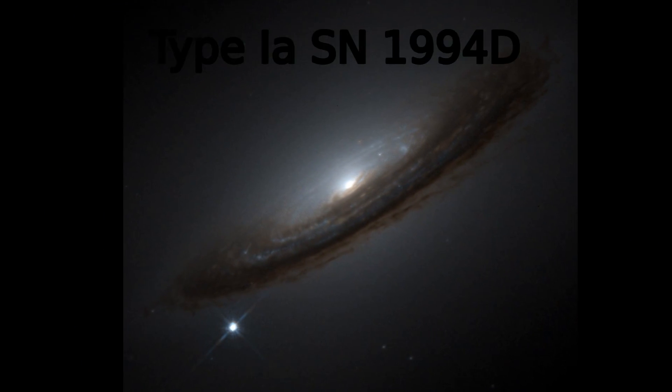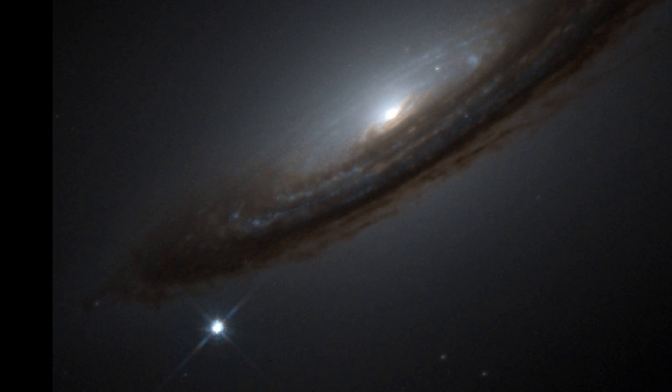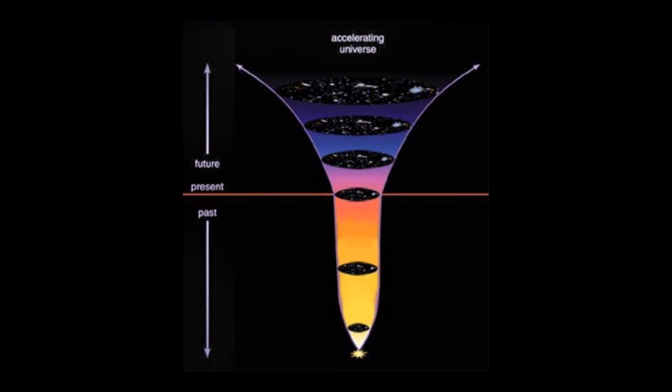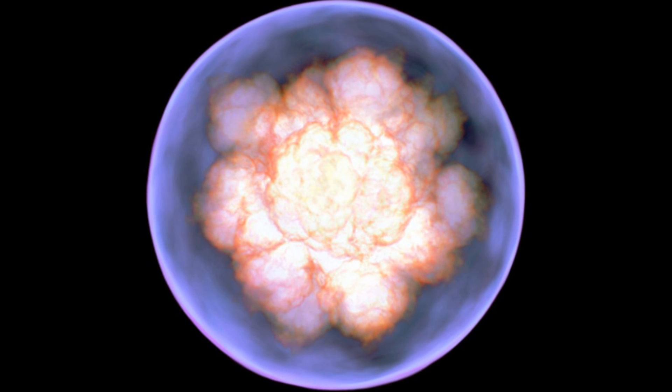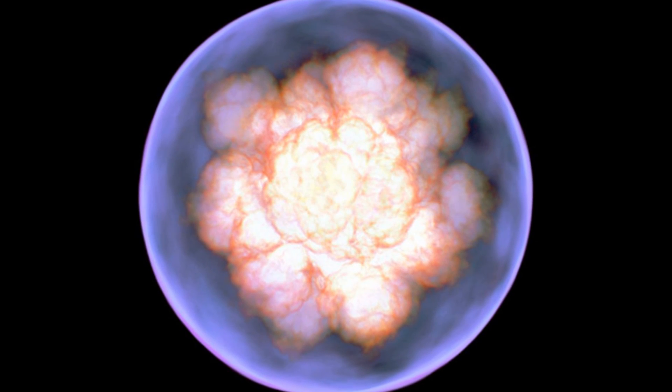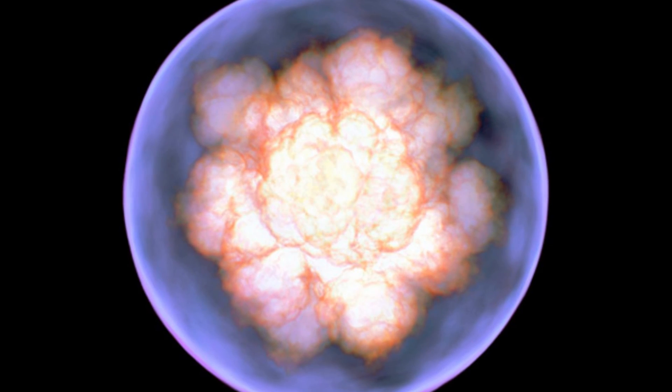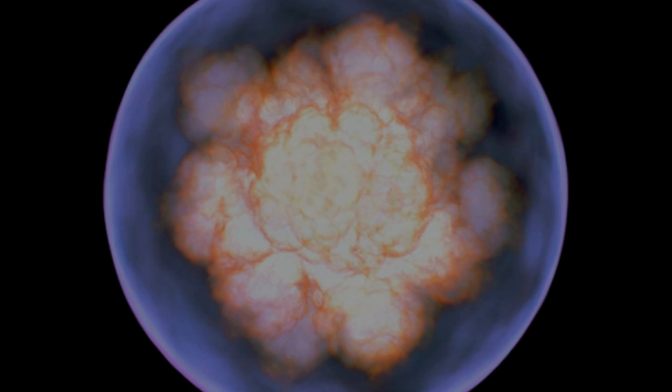Type 1A Supernovae are among the most luminous explosive events known and are observable from halfway across the universe. However, even though Type 1A Supernovae have been crucial in shaping our understanding of the universe, the exact nature of the progenitor system remains a mystery. While it is commonly accepted that Type 1A Supernovae result from the thermonuclear explosion of a carbon-oxygen white dwarf in a close binary system, the exact nature of the binary companion and the chain of events leading to the supernova explosion are still uncertain.